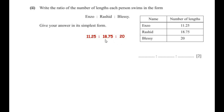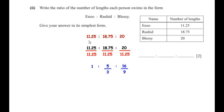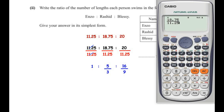We divide each number by the smallest, which is 11.25. So we get 11.25 divided by 11.25, which is 1; 18.75 divided by 11.25, which gives 5 over 3; and 20 divided by 11.25, which gives 16 over 9.